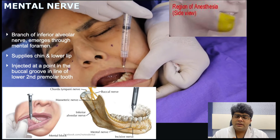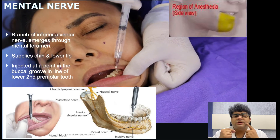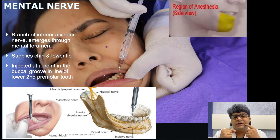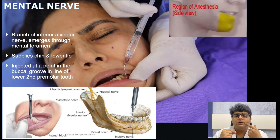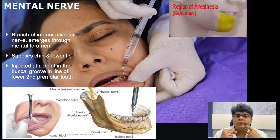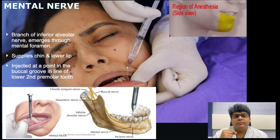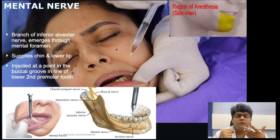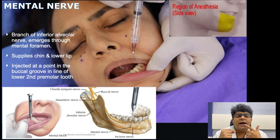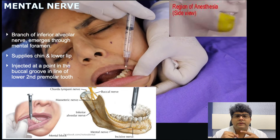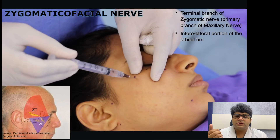The mental nerve follows the same position — the second premolar tooth or the junction between the first and second premolar tooth — but this time we go downward. With the other finger blocking it, we inject to block the mental nerve, which anesthetizes the chin area and the lower lip for surgeries of that area.